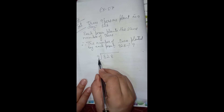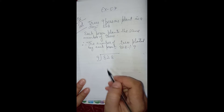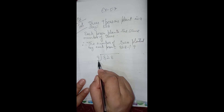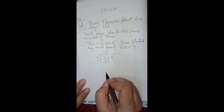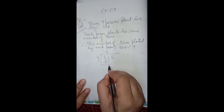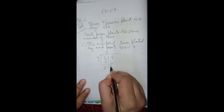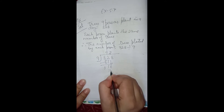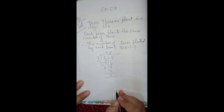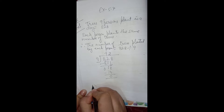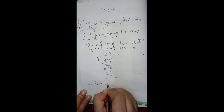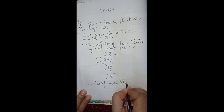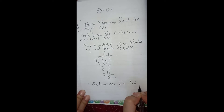Our divisor is a single digit. The first digit of the dividend is less than the divisor, so we take 2 digits. 9 nines are 81, which is nearest to 82. After subtracting we get 1, and bringing down 8, the remainder will be 0. Therefore, each person planted 92 trees.